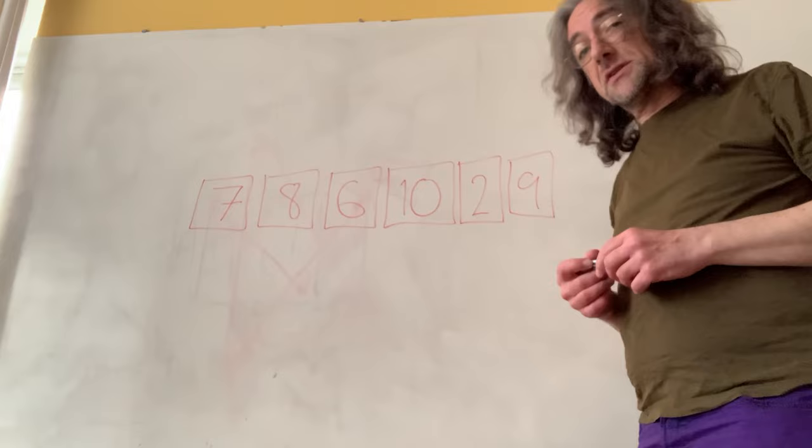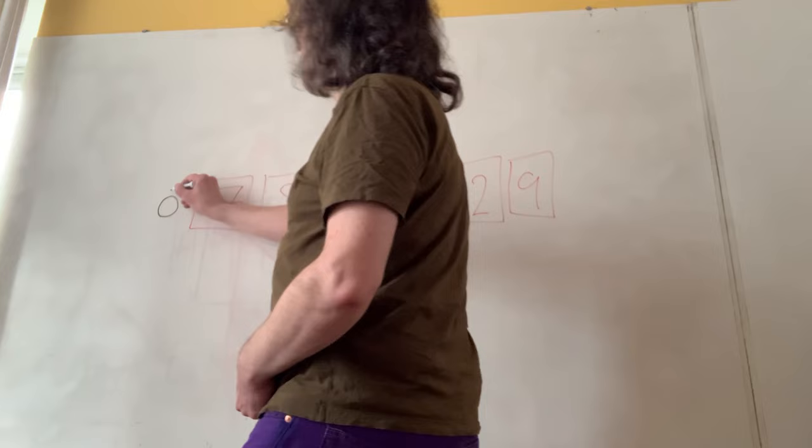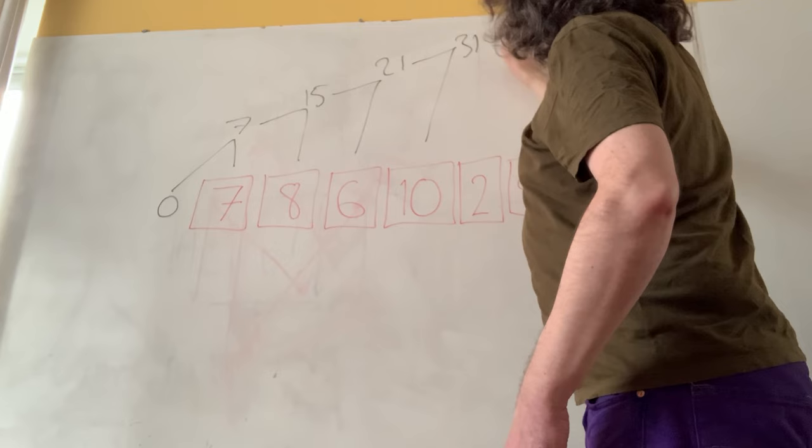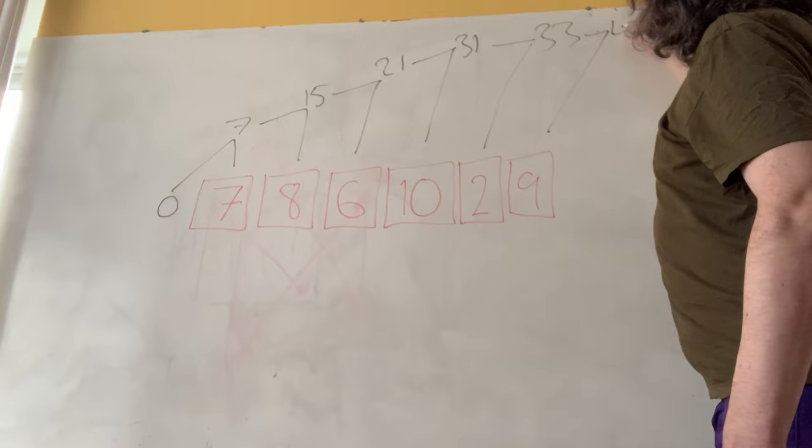I could start with a running total of zero and then add on my 7 to get 7, and add on my 8 to get 15, and then 6 to get 21, and then the 10 to get 31, then the 2 would take me to 33, and the 9 would get me to 42.